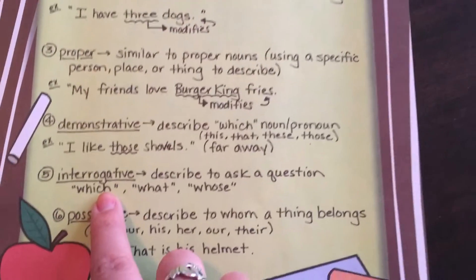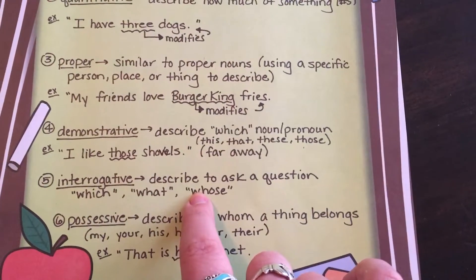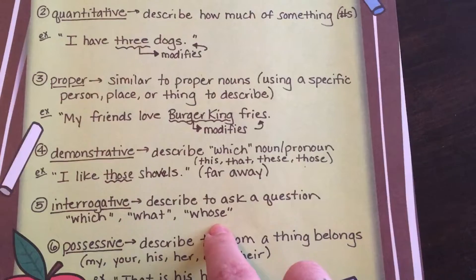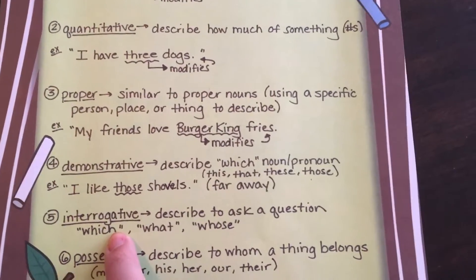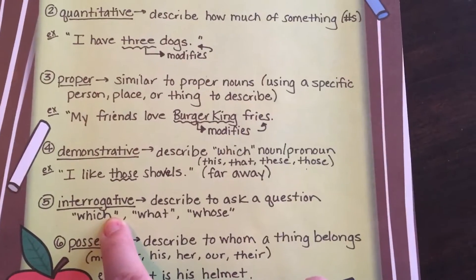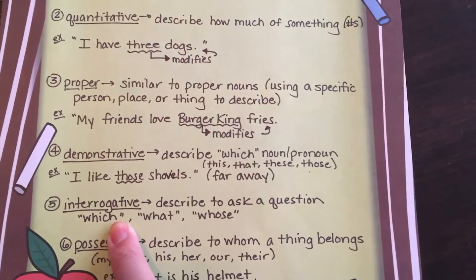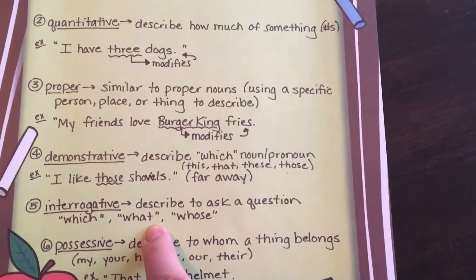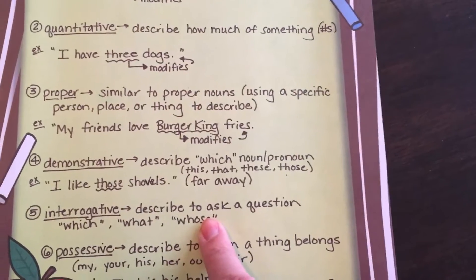Our fifth kind of adjective is interrogative, which is used to ask a question: which, what, or whose. 'Which' kind of asks like a choice that you have — for example, 'Which is your favorite color, blue or red?' You're given choices when asking 'which.' 'What' is more generalized, like 'What is your favorite way to cook an egg?' And 'whose?' — 'Whose shoes are those?'